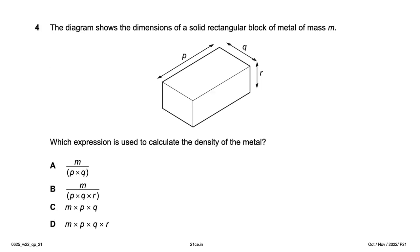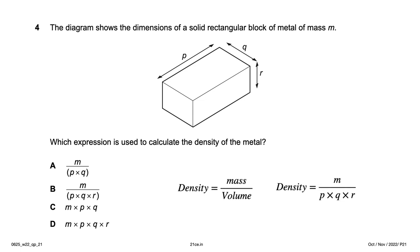The diagram shows the dimensions of a solid rectangular block of metal with mass m. Which expression is used to calculate the density of the metal? Density is mass divided by volume. Mass is m and volume is found by multiplying all the dimensions: p × q × r. So density = m / (p × q × r), option B.